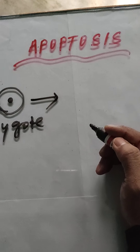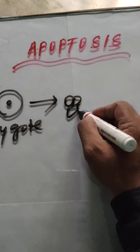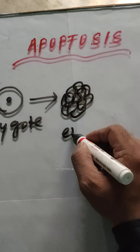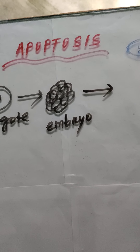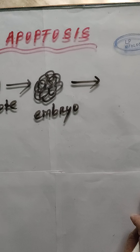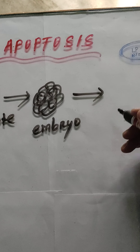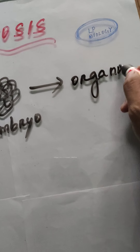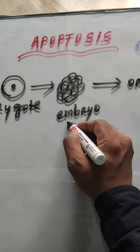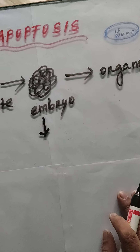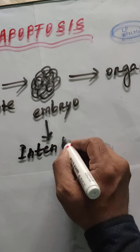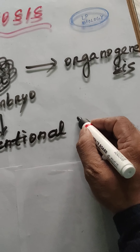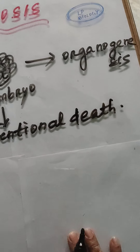When the zygote undergoes the process of cleavage, it produces an embryo. At the embryonic stage, the process of apoptosis starts. Not all cells of the embryo are needed during organogenesis. After formation of the embryo, organogenesis starts. During the process of organogenesis, some of the cells enter into the process of programmed cell death — intentional death. This intentional death process is called apoptosis.